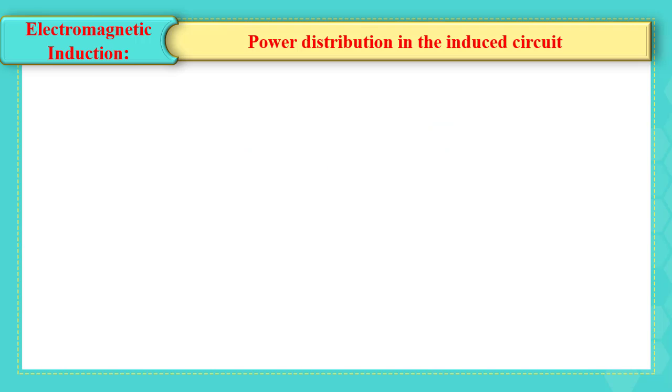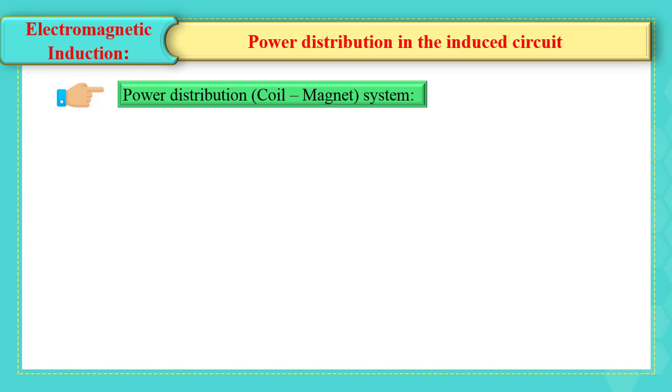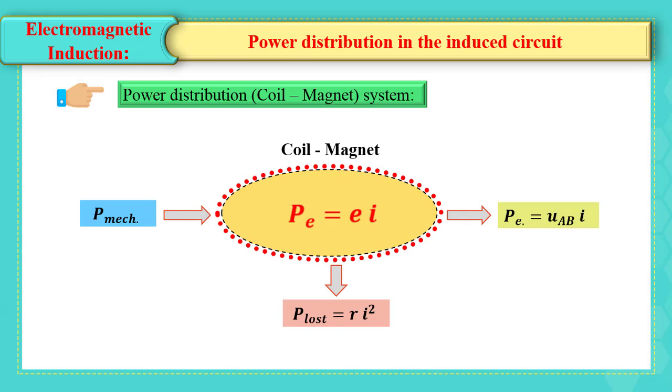Power distribution of coil magnet system. We can consider the coil magnet system as a converter of energy, where the mechanical power is converted into electric power, which equals E multiplied by I.